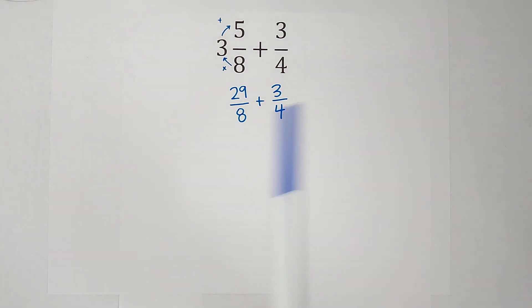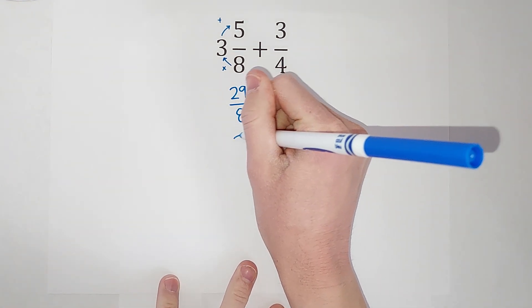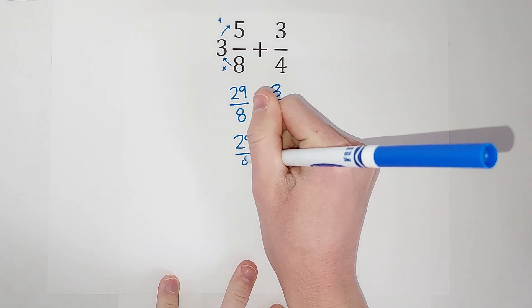But luckily this one isn't too bad. So I look at my denominators and I say, what is the smallest number both 8 and 4 go into? And it's 8, right. So the good news is we don't have to change this one at all, its denominator is already 8, so 29/8 gets to stay its happy little self.